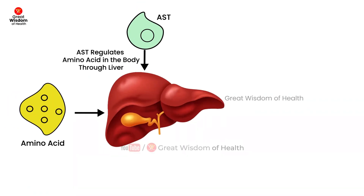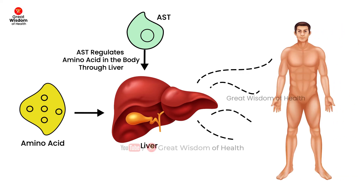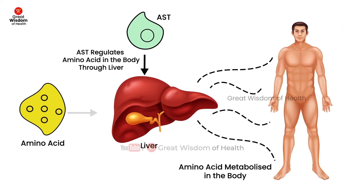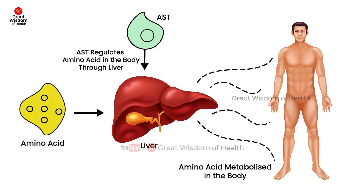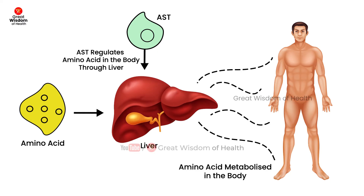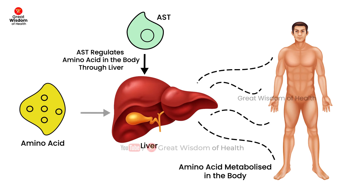AST is another enzyme that helps metabolize amino acids in the body. Both ALT and AST need to be at normal levels in the body. AST is found in the liver, brain, pancreas, heart, kidneys, lungs, and skeletal muscles.